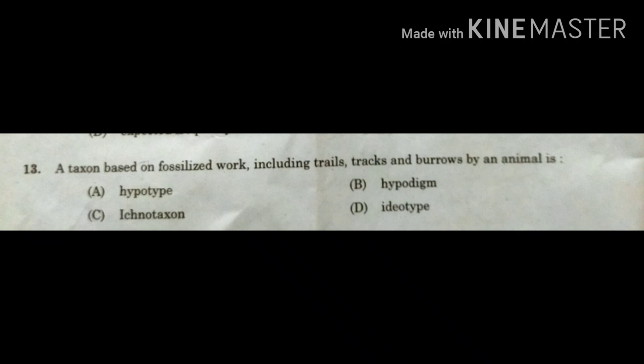Option B, hypodigm, is a sample from which the characters of a particular plant, animal, or population are described. A taxon based on fossilized work — such as trails, tracks, and burrows — is known as ichnotaxon, which is option C. Option D, idiotype, is a type specimen explained by an author but collected from a region other than the region described by the author. So the correct option is C: ichnotaxon.